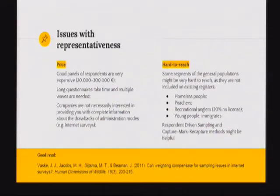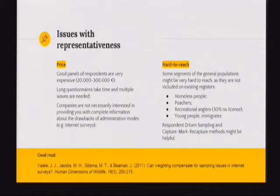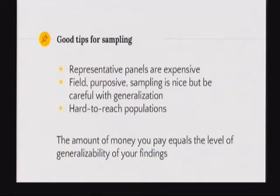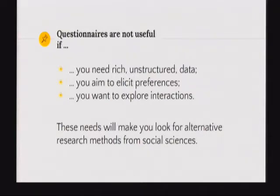In conservation there is another critical topic: hard-to-reach populations. If you want to sample the general public, you take a general population directory and use random or stratified random sampling. But when you're counting homeless people, poachers, or anglers, you have no directory. If 30 percent of anglers don't have a license, a register of licenses is an unreliable sampling source. Capture-recapture approaches are becoming very popular in social sciences because they are really effective — and you can apply them with questionnaire participants as well.